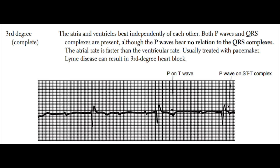Third degree AV block occurs when the P waves and the QRS complexes have no relationship to each other whatsoever. The P waves move at their own interval and the QRS complexes move at their own interval as well; the P waves are not conducted across the AV node into the ventricle. The atrial rate is generally faster than the QRS rate. The QRS complexes are generated by either the AV node or some other cell in the His-Purkinje system or ventricular myocytes, generating what is called an escape rhythm. This escape rhythm keeps the patient alive, though with a slower QRS rate, because the intrinsic automaticity of the AV node and cells below it is slower than the sinoatrial node. These patients are generally given pacemakers.